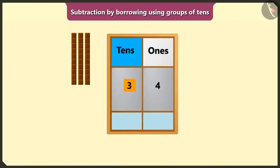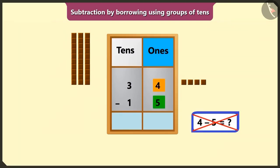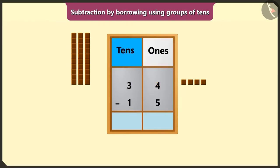34 means 3 tens and 4 ones. 15 means 1 tens and 5 ones. We cannot subtract 5 from 4 in the box of ones. So we will borrow 1 tens from 3 tens from the box of tens.